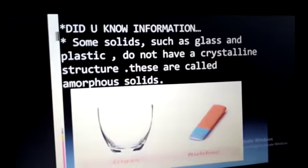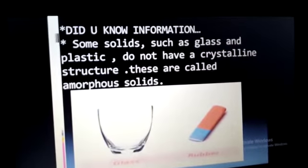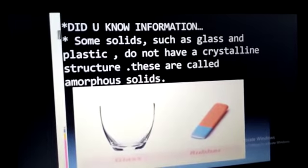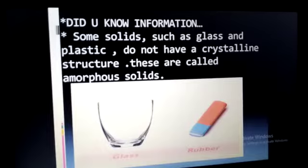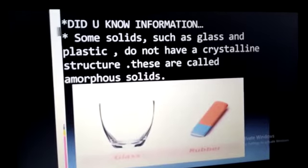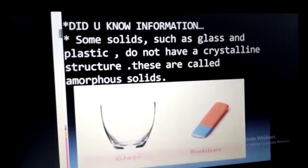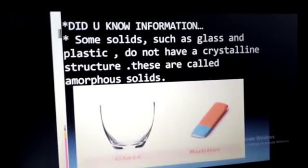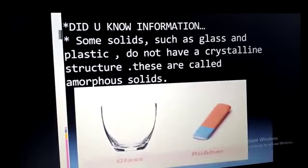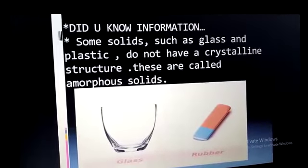Did you know? Some solids such as glass and plastic do not have a crystalline structure. These are called amorphous solids. Amorphous solids mean all those materials which do not have sharp edges.